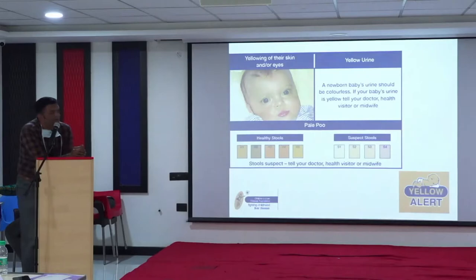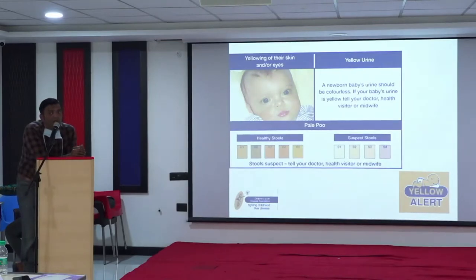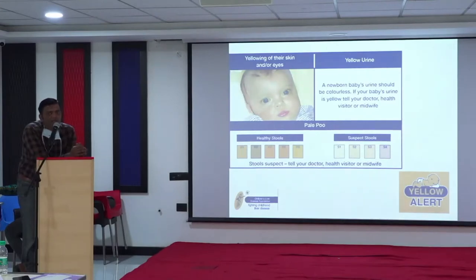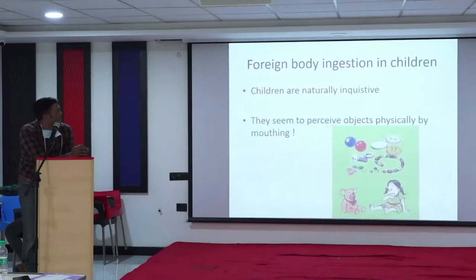A child whose eyes are yellow, with a suspect pale stool and dark urine, is someone who needs to be seen urgently by a paediatrician and other professionals to be assessed and treated.